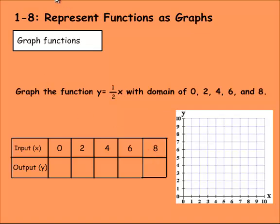So for the first one, 0 times 1 half would just be 0. 2 times 1 half or 1 half of 2 would just be 1. You can also multiply these times 0.5 if you would like as well. 4 times 1 half would be 2. 6 times 0.5 or 1 half would be 3. And then 8 times 1 half would be 4. And now we can try plotting these on the line.